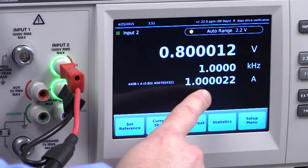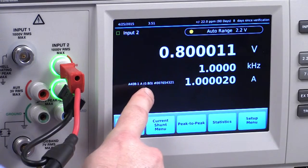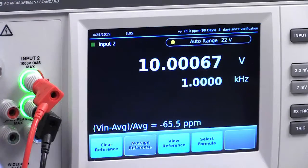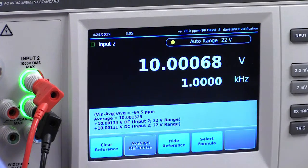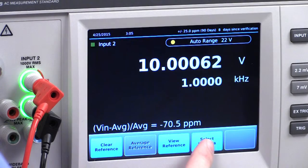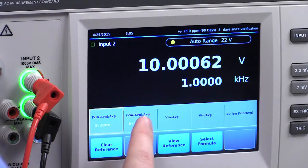When using a current shunt, the 5790B displays both the voltage and current measurements along with the shunt information. For transfer measurements using a DC transfer, the measurement can be viewed on the screen in many formats.